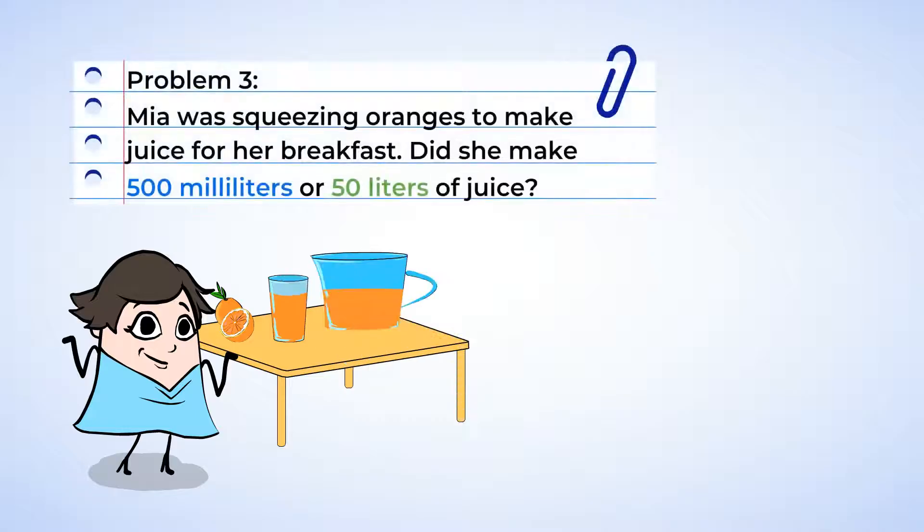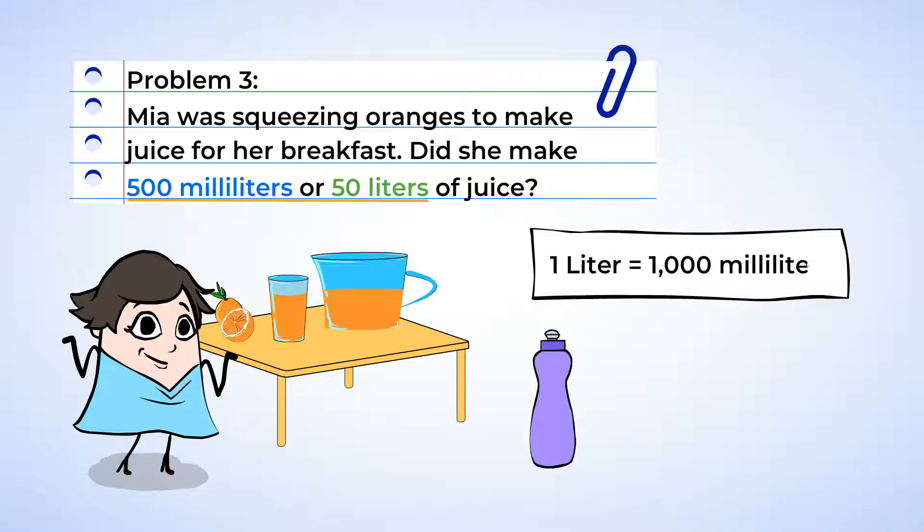Check out this next problem. Mia was squeezing oranges to make juice for her breakfast. And the question is, did she make 500 milliliters or 50 liters of juice? Let's think about the measurement of a liter. A liter is about the size of a sports bottle. And one liter is also the same amount as 1,000 milliliters.